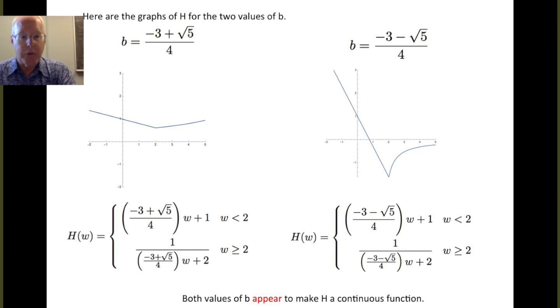So first of all, if b takes on the value minus 3 plus root 5 over 4, so down here we've gone to the h definition and we've just put in that value for b in those two places. And the graph of this function is shown here. And we can see that it does look to be continuous at 2. And there's no other jumps or breaks in the graph, so it looks like maybe this function h with this value of b does turn out to be continuous.